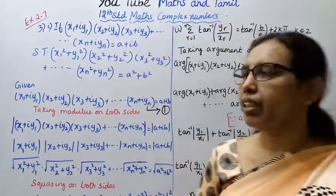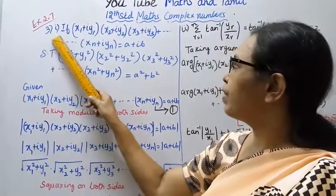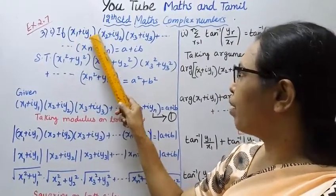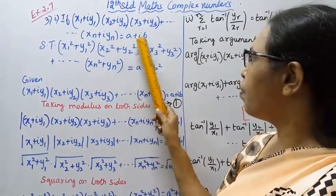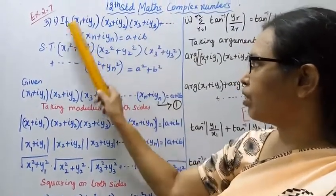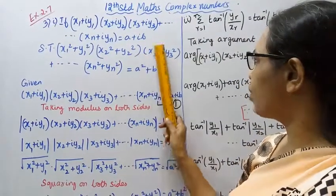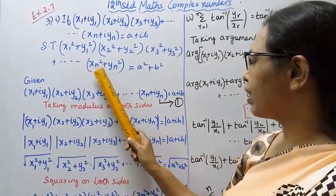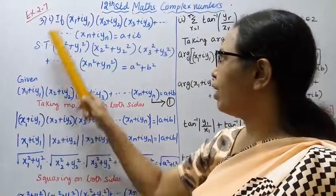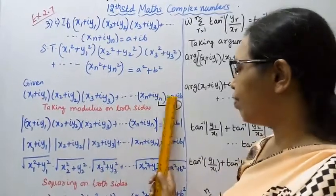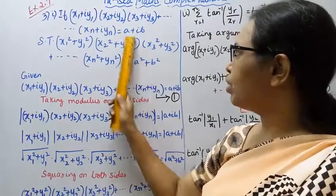Hello students, welcome to Max and Tamil channel. 12th standard, Max Complex Numbers, Exercise 2.7, third sum, third law. First subdivision: if (x1 + iy1)(x2 + iy2)(x3 + iy3)...(xn + iyn) = a + ib, show that (x1² + y1²)(x2² + y2²)(x3² + y3²)...(xn² + yn²) = a² + b². Now, prove this. Given is what is given — take that as given.